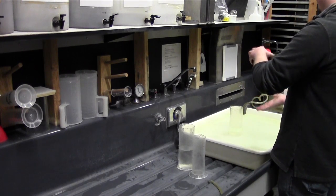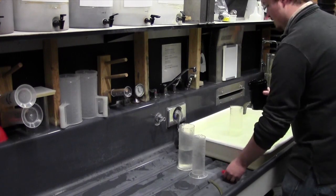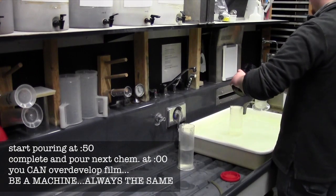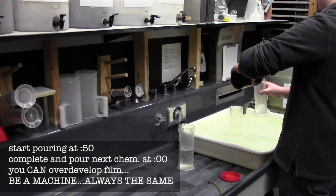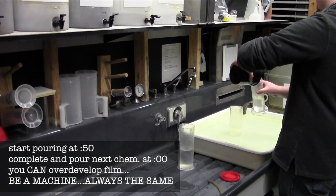Once that gets done, and you pat the bubbles out, beginning 10 seconds before your cycle is over, pour your stop bath back into the container.